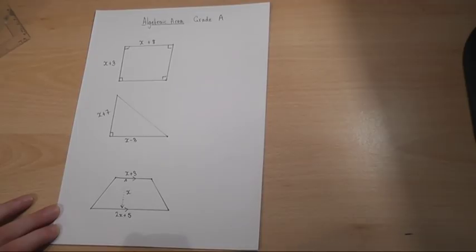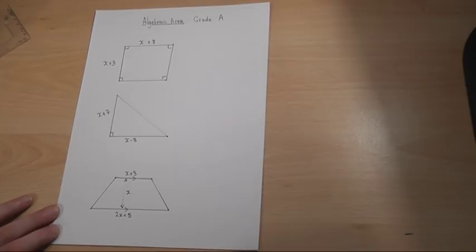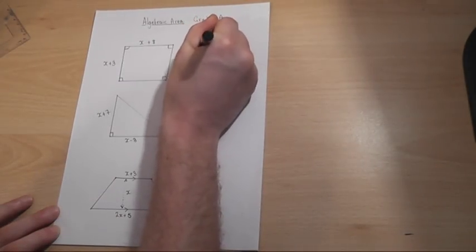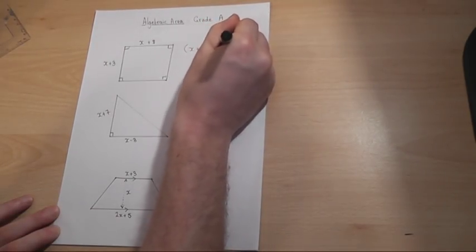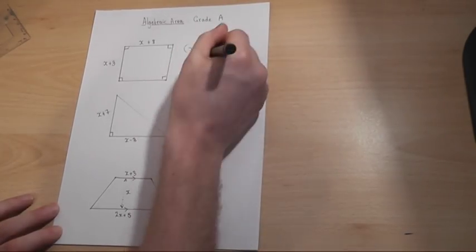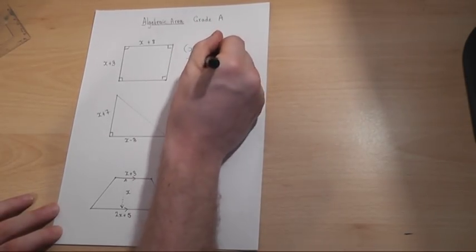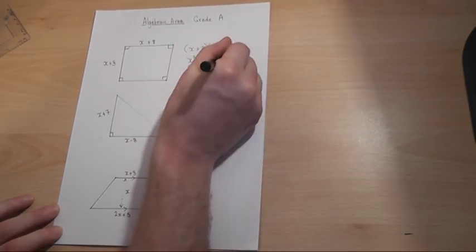To find the area of a rectangle, we multiply the two sides together. So to find this area, we would have to work out what (x+3) times (x+8) is. You might use a grid method or foil or smiley face, but we know the answer becomes x² + 11x + 24. So that is an expression for the area of the rectangle.